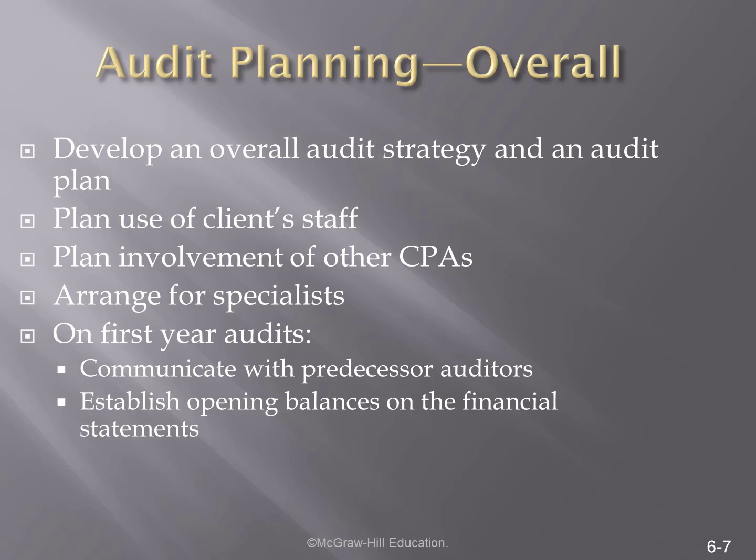And then if we are conducting the audit for the first time, one of the things that we need to do is to communicate again with the predecessor auditor, primarily to identify elements that we need to begin the audit. Some of these things may be the timeline related to depreciation for long-term assets, or related to the beginning balances of inventory and other items. We need to understand how the predecessor auditor identified these elements so that we can complete the audit for this year.